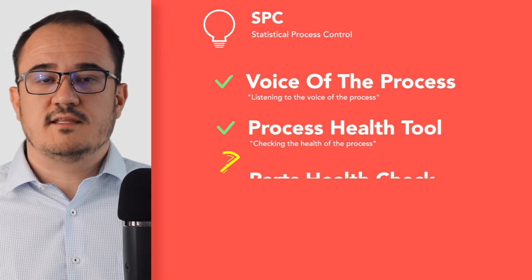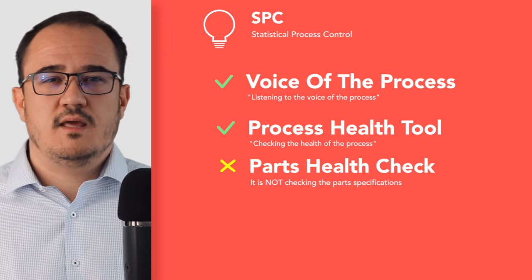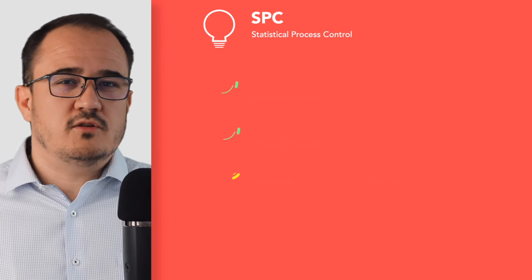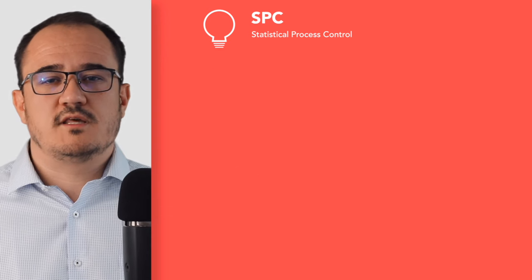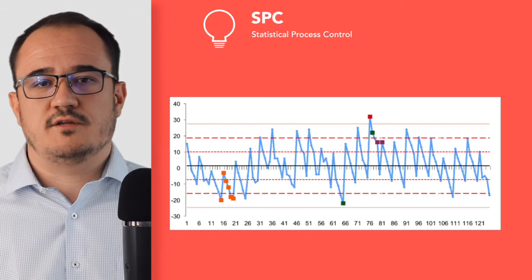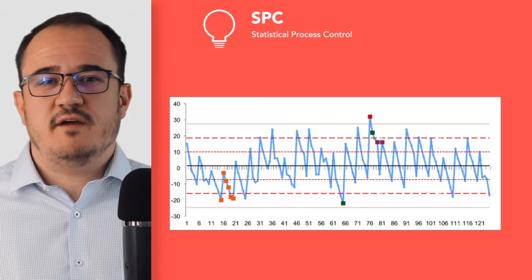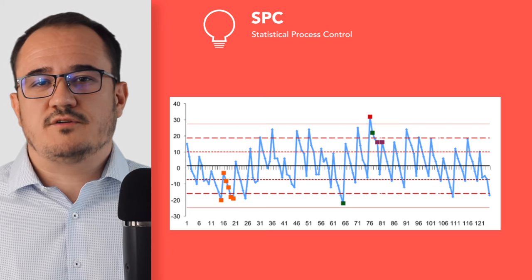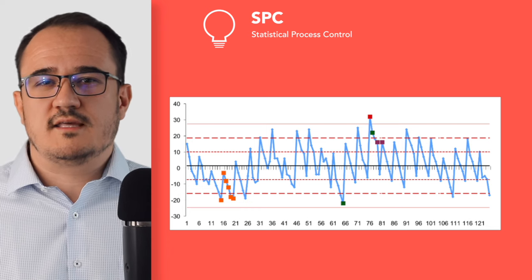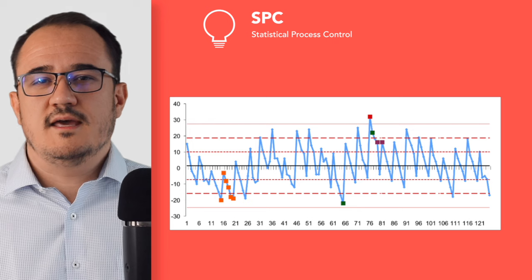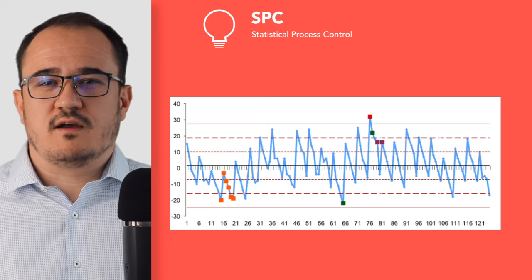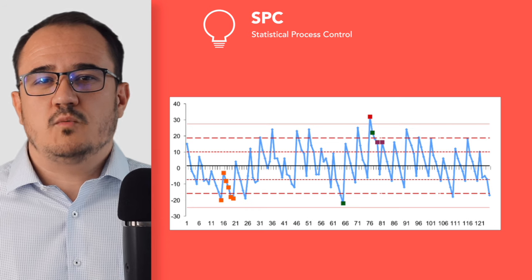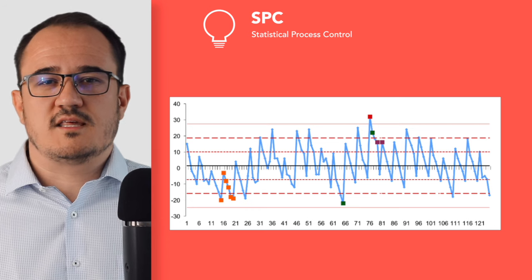What SPC is not is checking the health of the parts. All your processes in your company are essentially big random number generators, defined by various variables. The problem with a random number generator is that you don't exactly know what is coming next, and that makes the process difficult to understand and to predict. So how do we understand if the process is healthy or not?